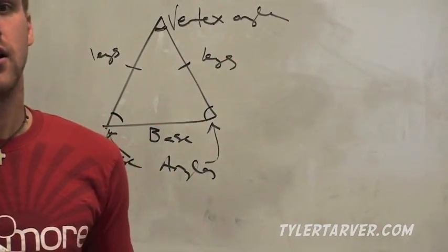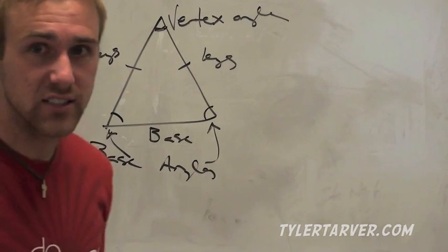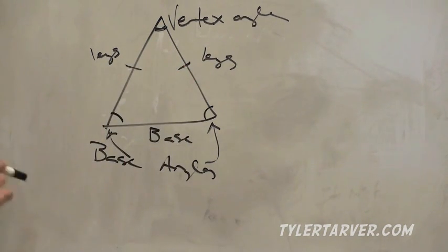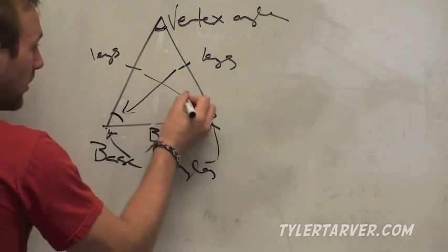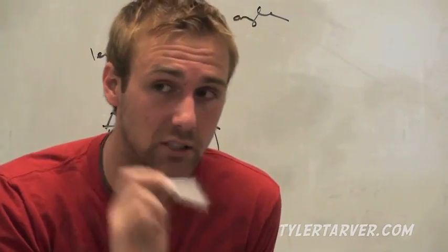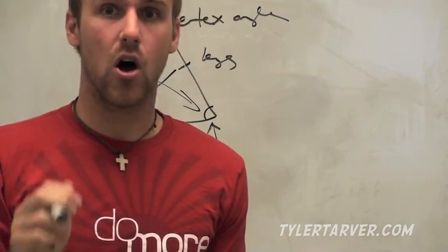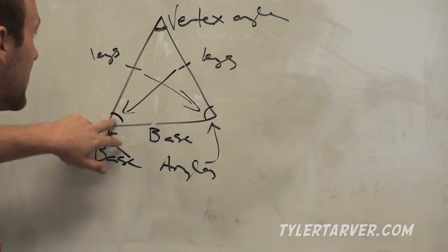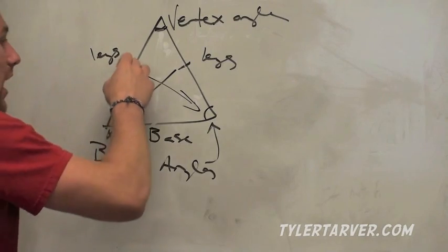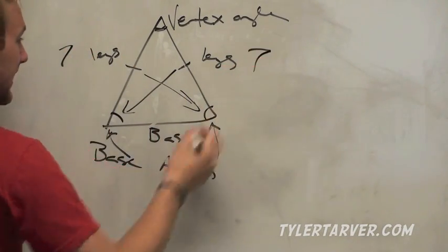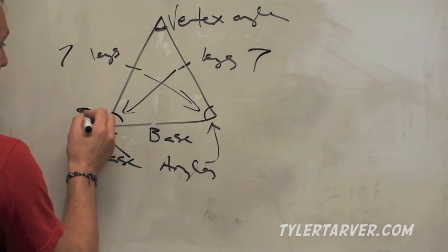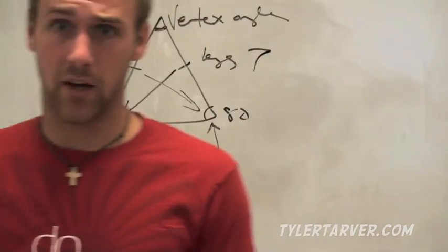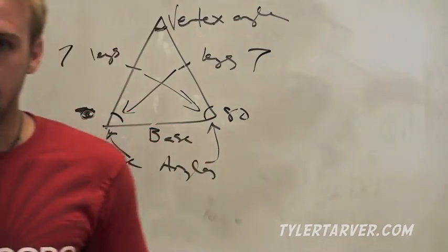The most important thing to take away is the Isosceles Triangle Theorem: if two legs are congruent in a triangle, then their opposite angles are congruent. The angle opposite a leg is the only angle that leg is not touching. So if both legs are seven, and one base angle is 80°, the other must also be 80°.